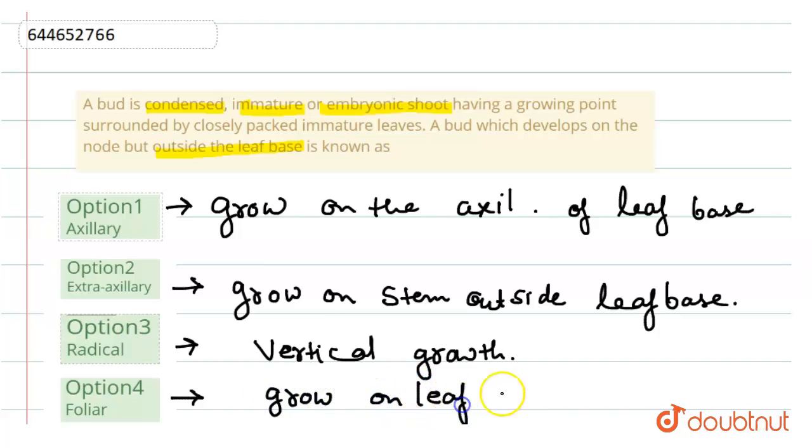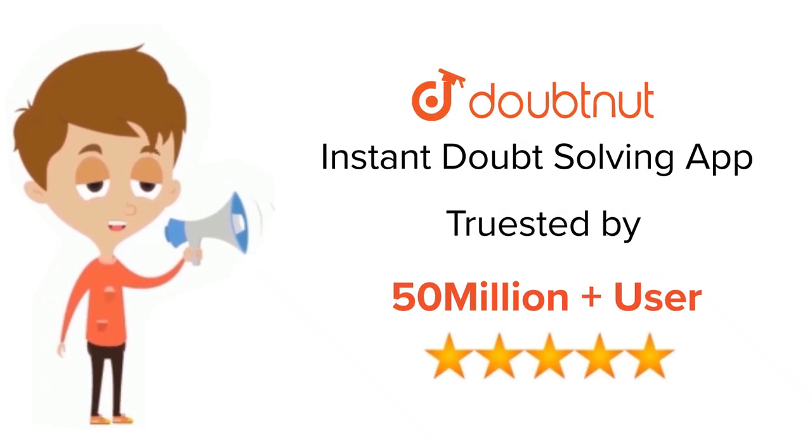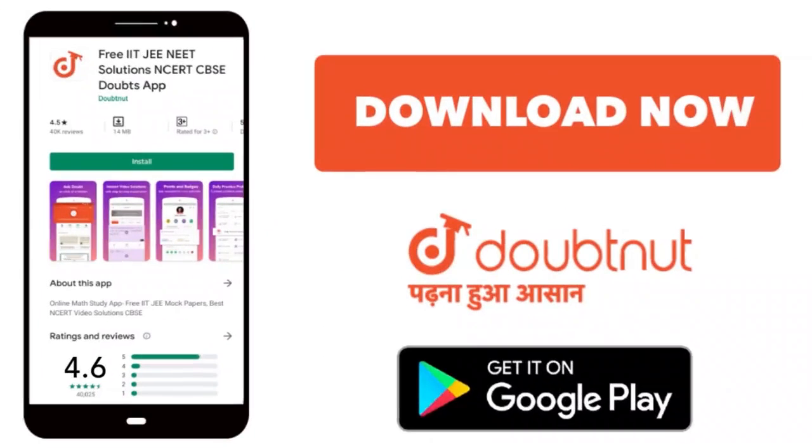So when we see the answer, the answer is the second option, extra axillary bud. Thank you. For class 6-12, IIT-JEE and NEET level, trusted by more than 5 crore students, download Doubtnet app today.